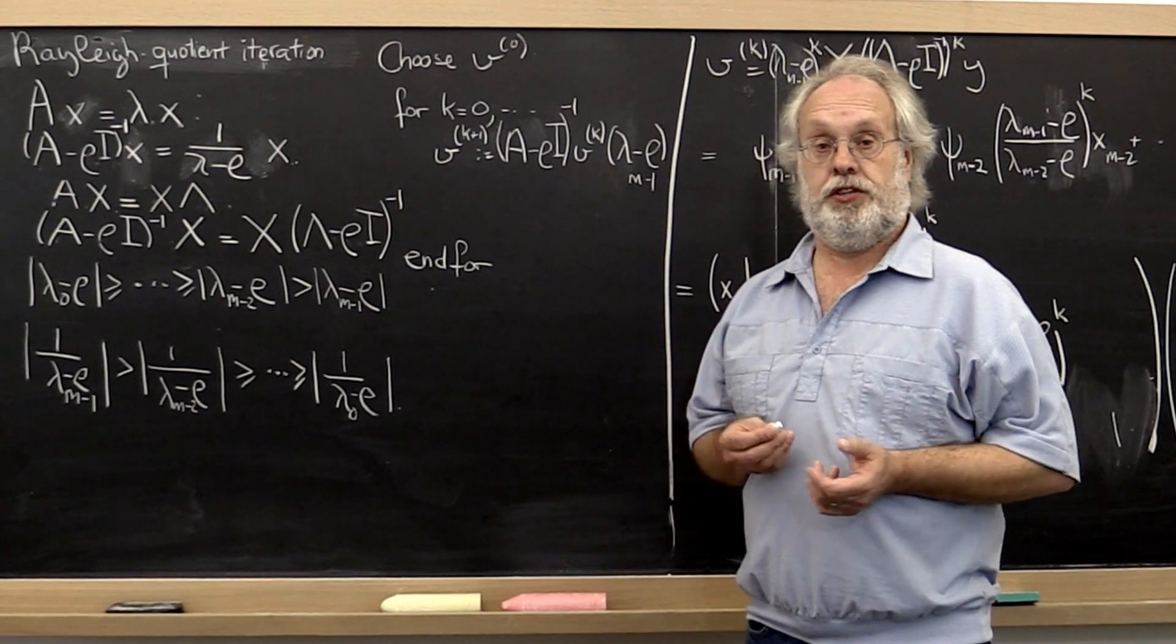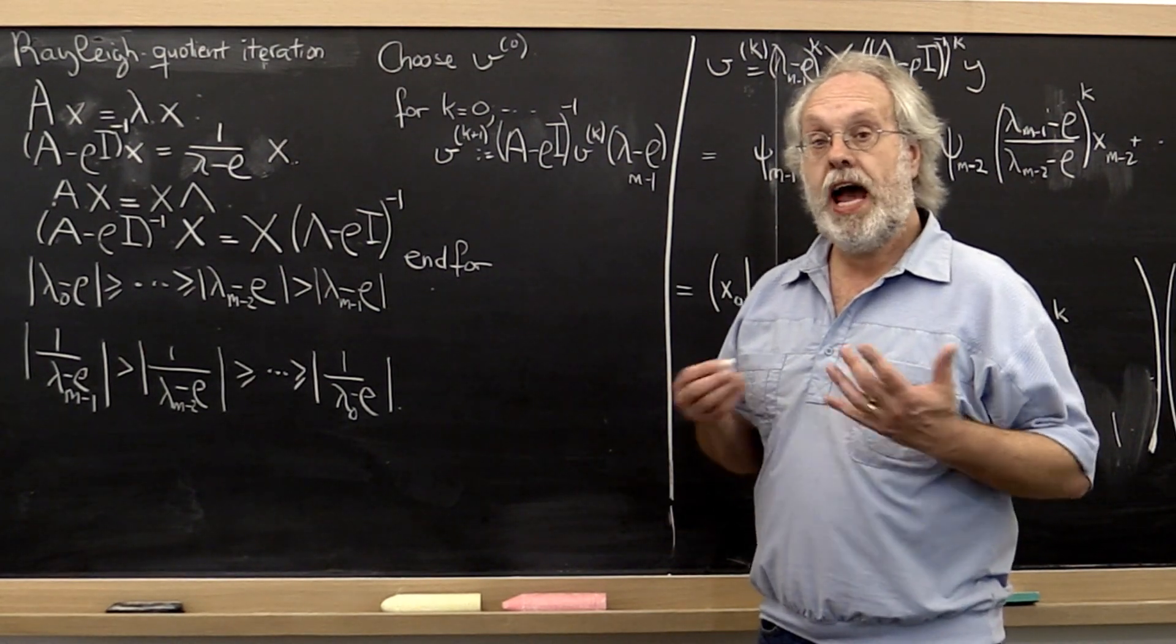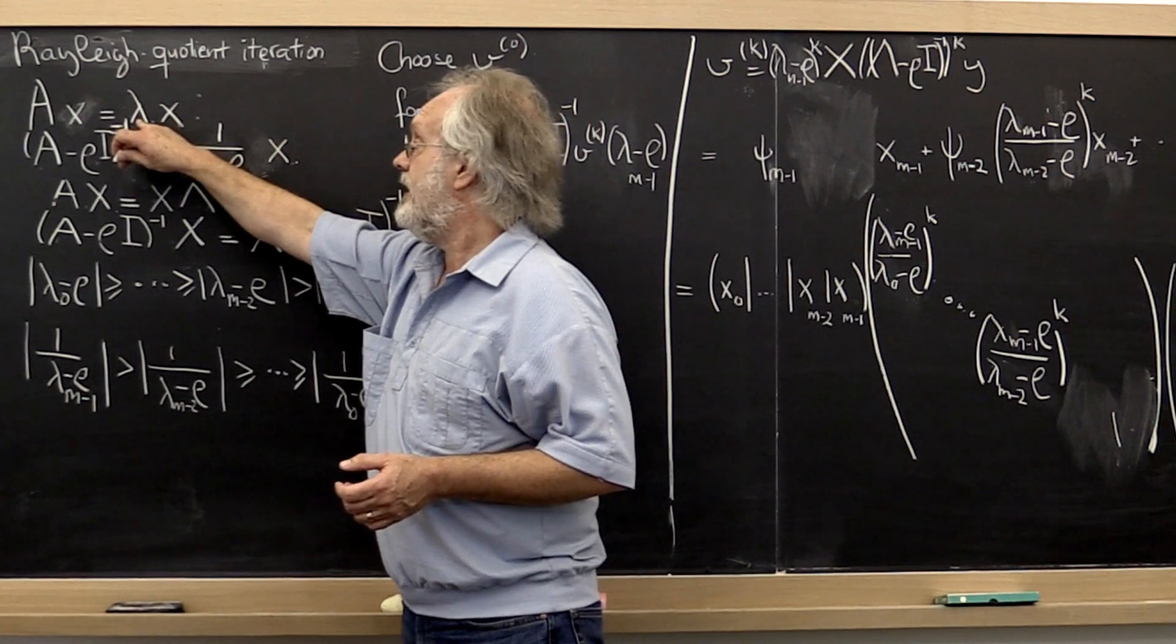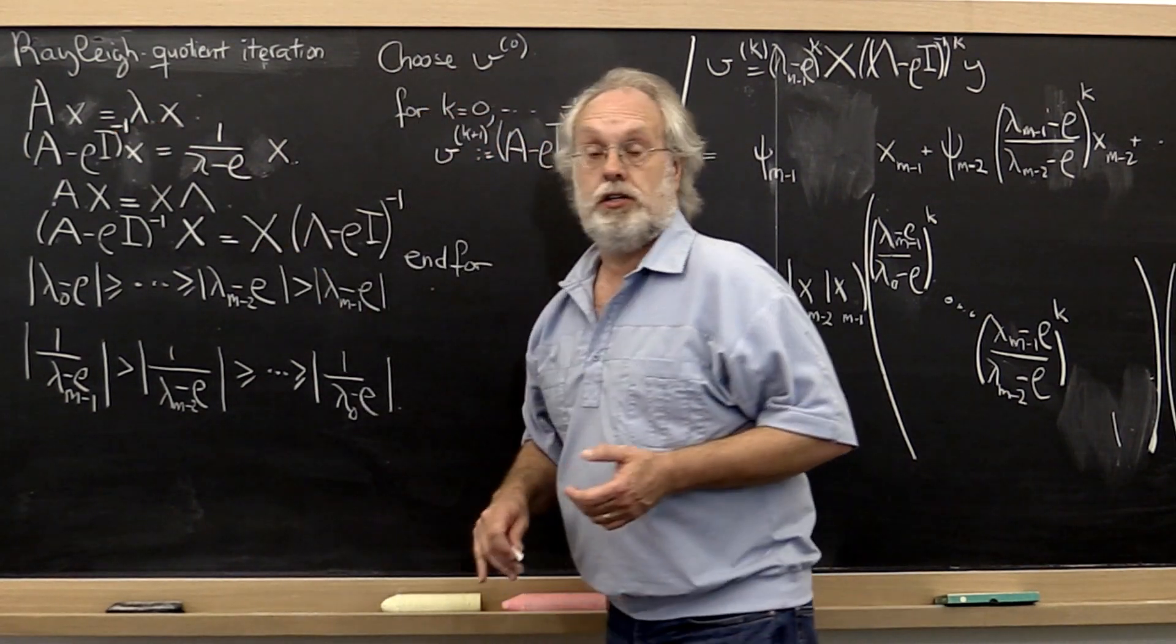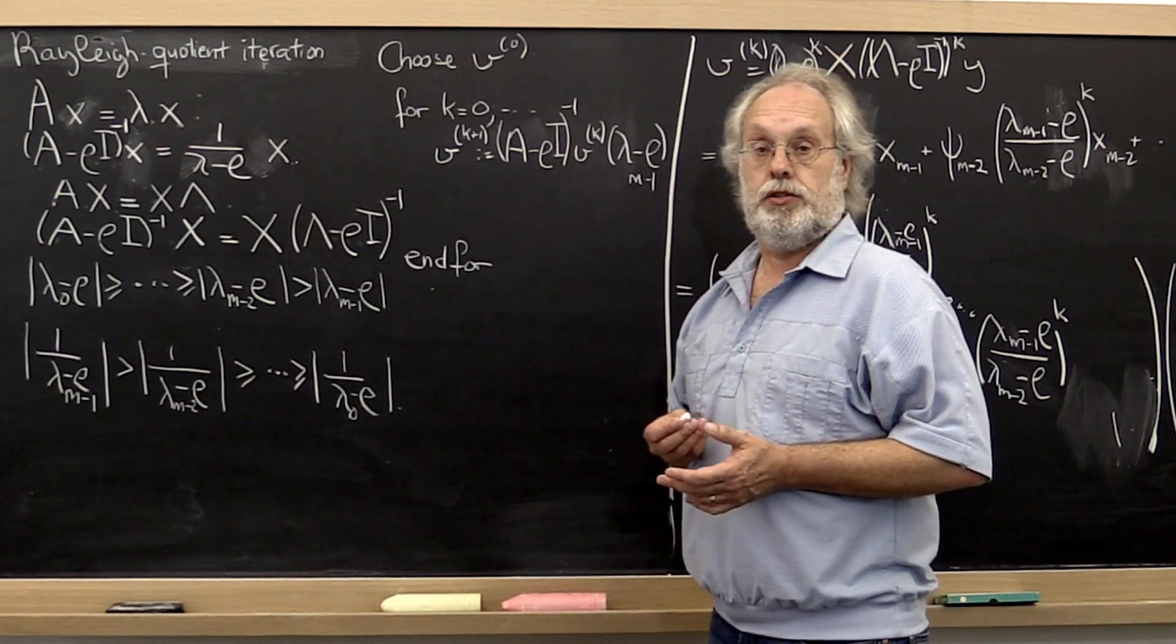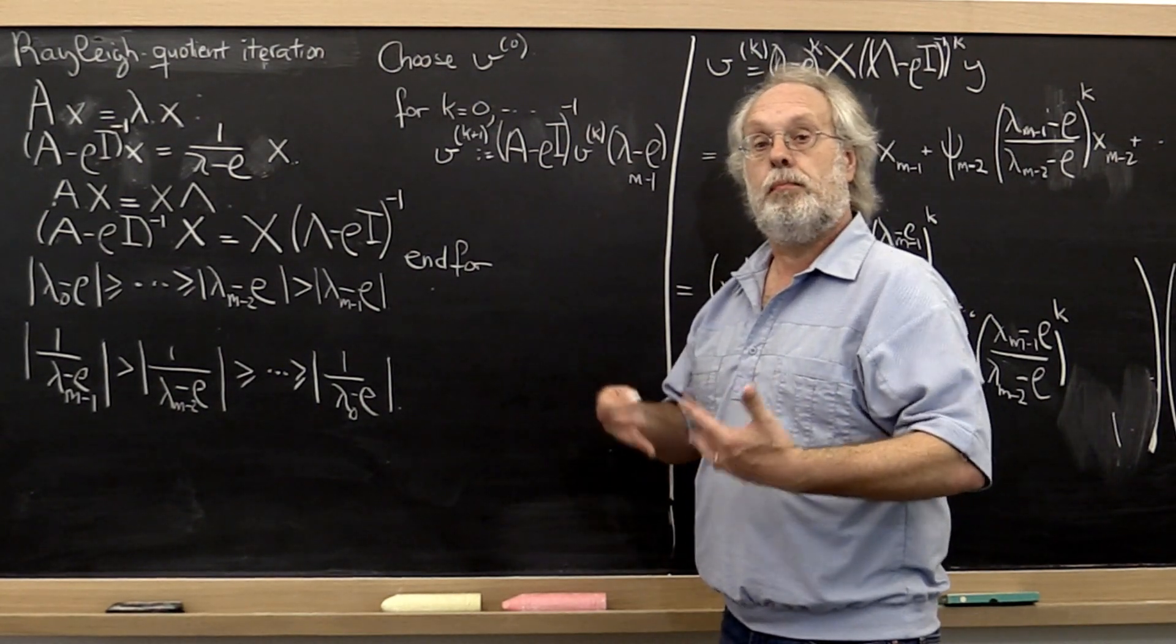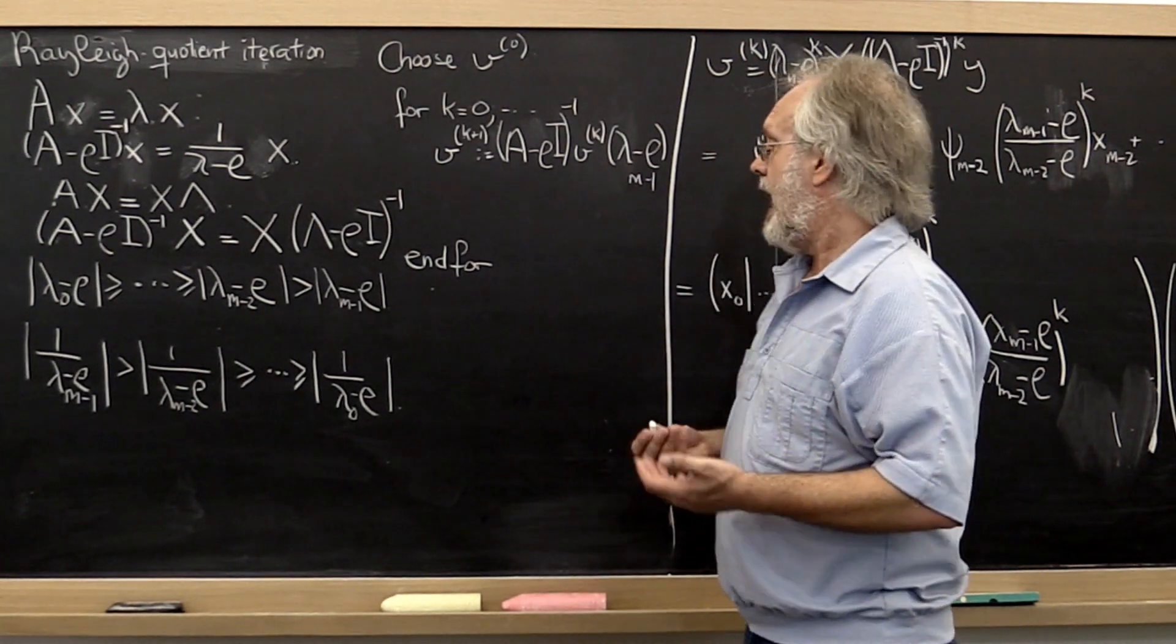Now the final observation is that we actually know how to come up with an approximation for the eigenvalue that is smallest in magnitude. Or rather, as we converge to it, we can get better and better approximations for it. How is that?